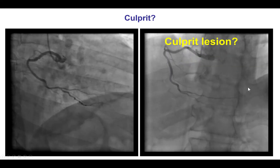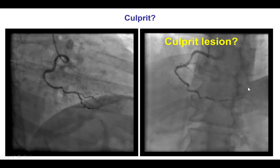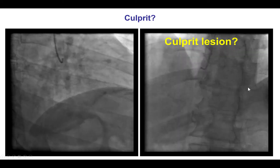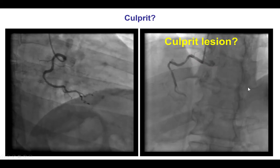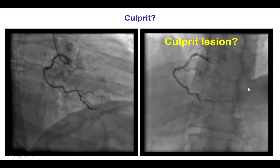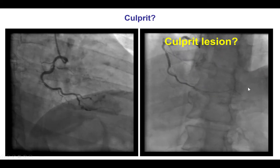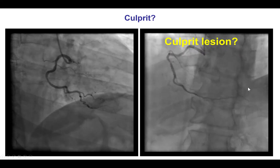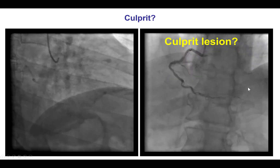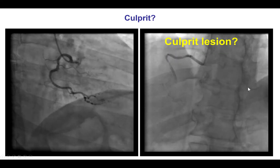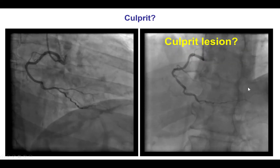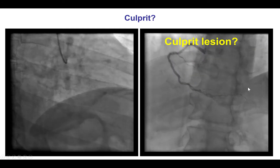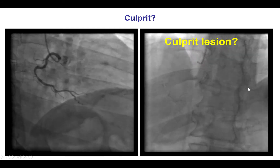After imaging the left coronary artery, we performed angiography of the right coronary artery. However, to our surprise, that was a small non-dominant vessel without any significant lesions, therefore leaving the question of the culprit vessel still open.